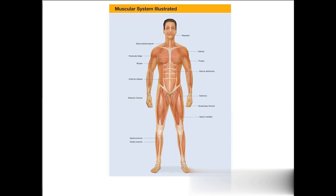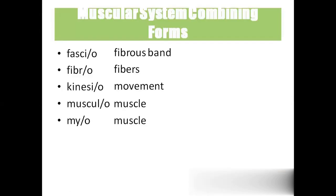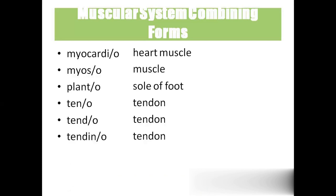Coming to the combining forms: fascio means the fibrous band enveloping the entire muscle. Fibro means fibers — muscle fibers. Kinesio means movement, so kinesiology is the study of movement. Musculo means muscle. Myo is also muscle. Myocardio — myo means muscle, cardio means heart — so heart muscle. Myosin is the protein present in the muscle. Planto means sole of the foot. Teno is tendon — tendon is the part which makes the muscle attach to the bone, as shown in the picture.